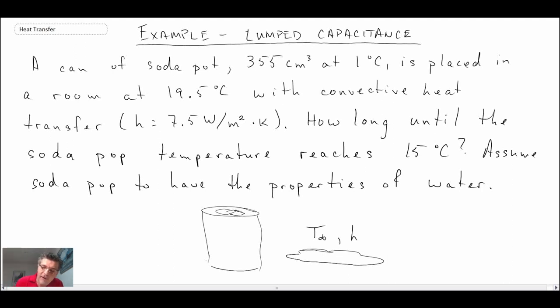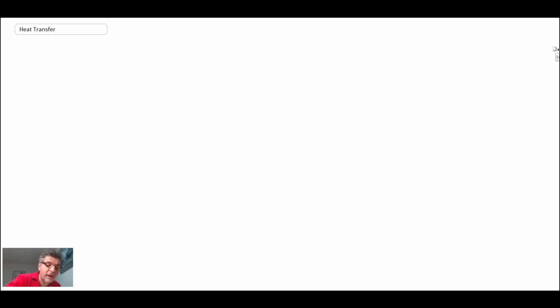The room temperature is 19.5°C, and we want to find the time for the soda pop temperature to go from 1°C to 15°C. We're taking it out of the refrigerator, putting it on a table, and monitoring how long it takes for that temperature change.